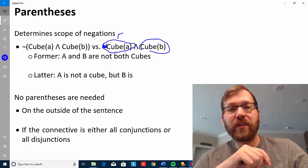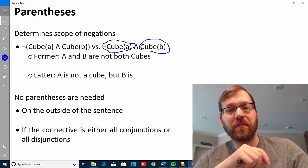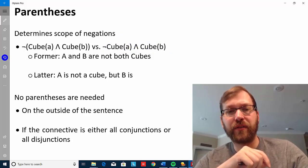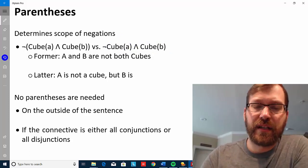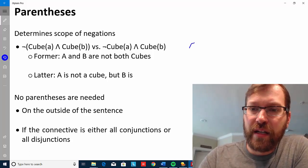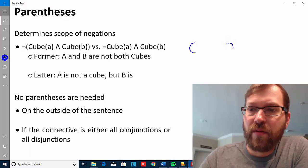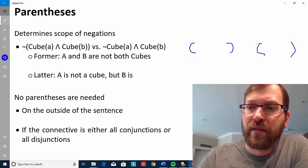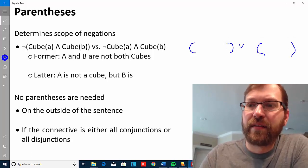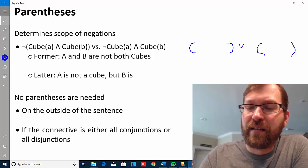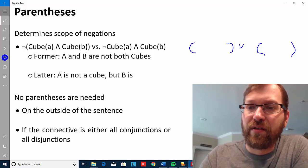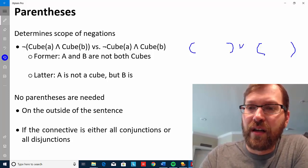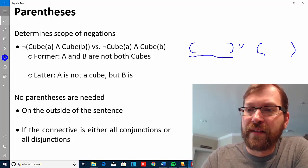More generally, and we saw this on the last page, parentheses are letting us know how our connectives are connecting things. It's letting us know that, for instance, in this case, our disjunction symbol, the wedge, is connecting two complex sentences.